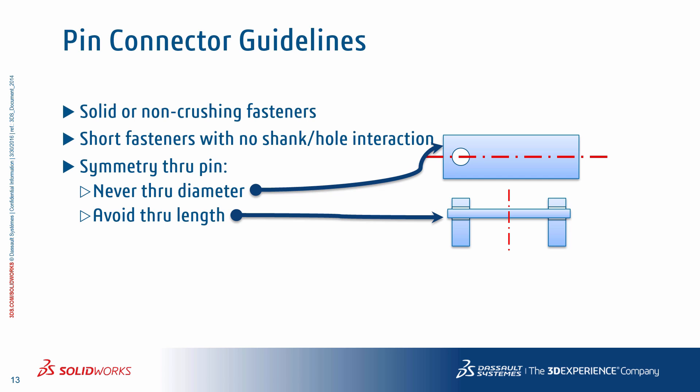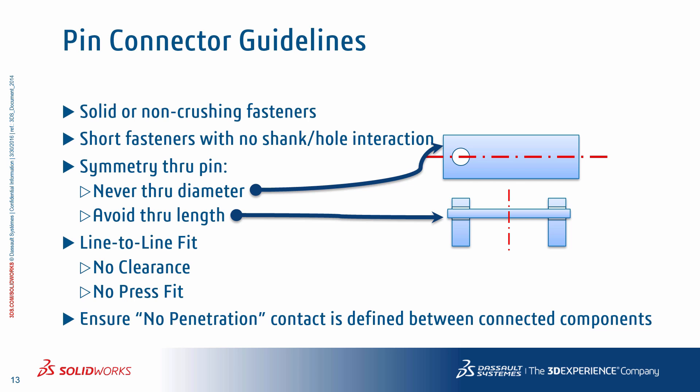Avoid using symmetry if the symmetry plane cuts through the connector's cross-section or through the shank length. The pin is assumed to have a line-to-line fit with no radial clearance, but this does not represent a press-fit condition. These are often important characteristics of the pin to understand, so you might want to consider a solid representation to capture this behavior if it factors into your problem. Ensure that a no-penetration local contact condition is defined between the connected components — this is important so the pin carries the load instead of part-to-part bonded contact. If you have many face pairs you want bonded beyond the ones local to pins, set your global contact to bonded, but make sure you define local contacts for the faces at the pin. I would strongly recommend reviewing the Simulation Step-Up Series episode on contact modeling in Solidworks Simulation.